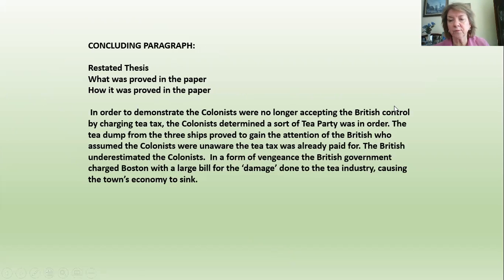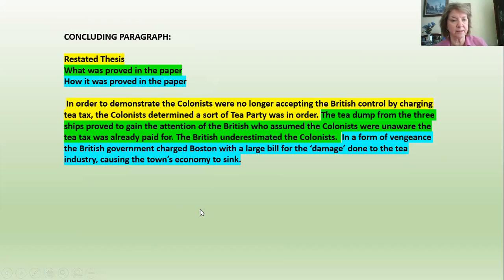Now we look at the whole thing when we connect all three sentences together for the concluding paragraph: the restated thesis, what was proved in the paper, and how it was proved in the paper. The yellow is the restated thesis — that's the first one. In green, what was proved in the paper is put secondly. The teal is how it was proved in the paper, so that last sentence is in teal.